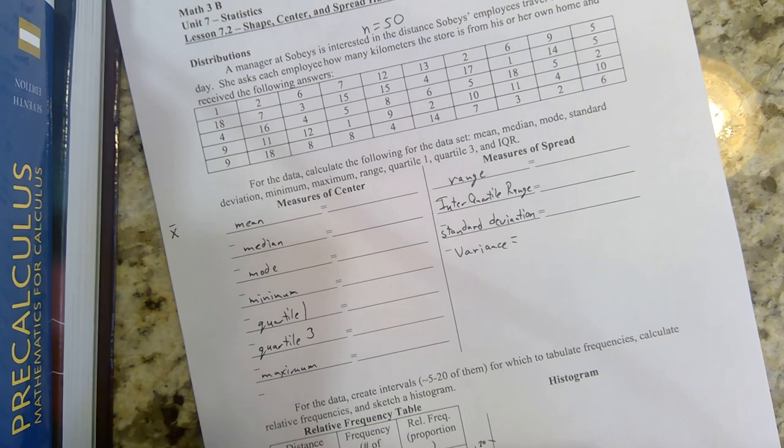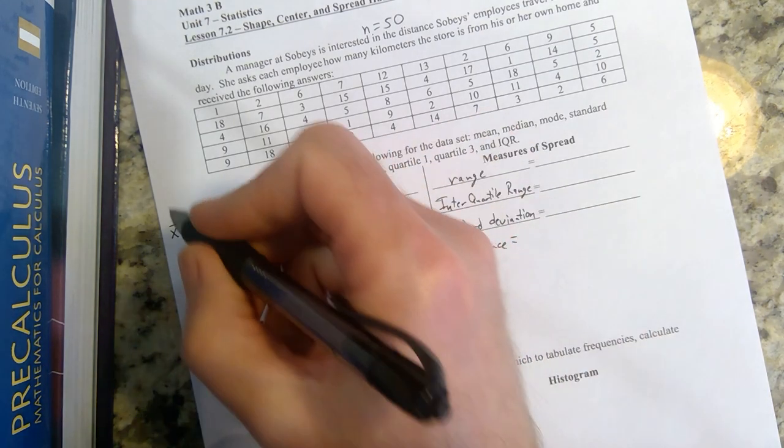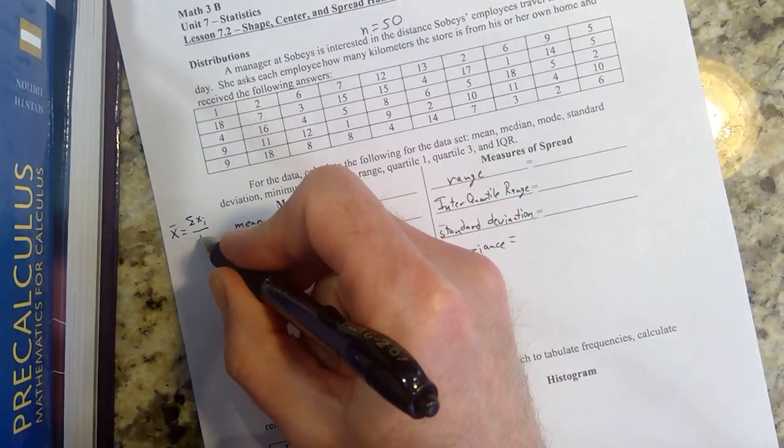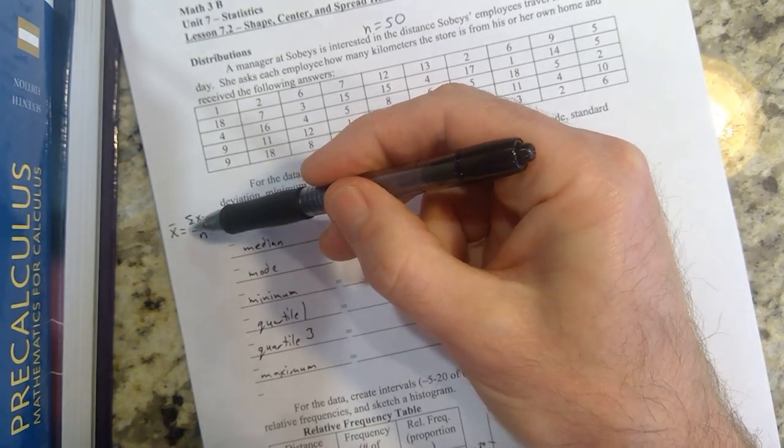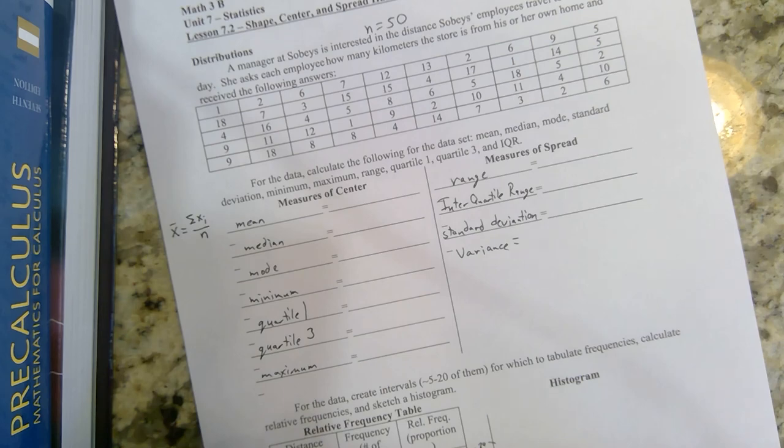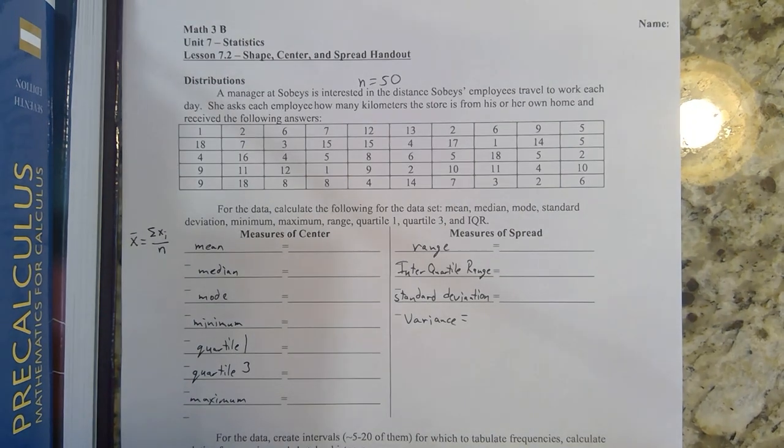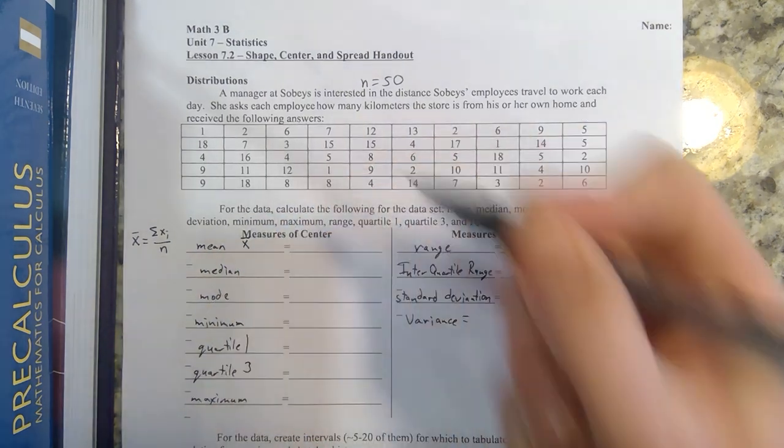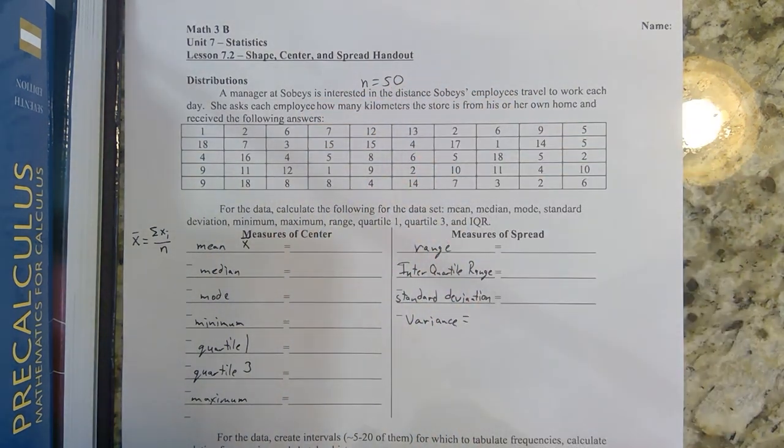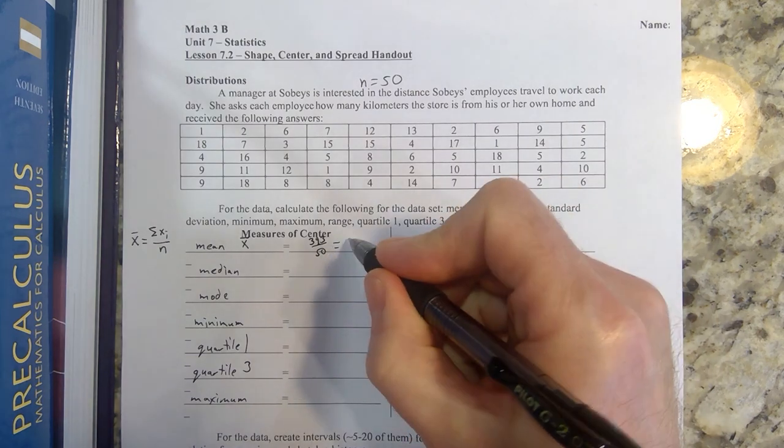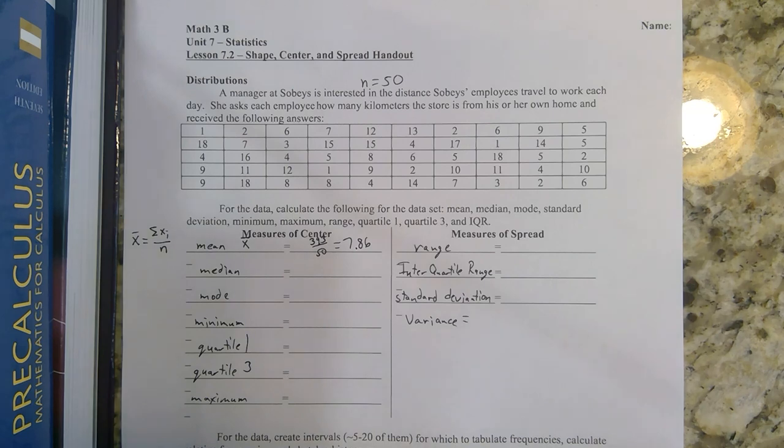The mean of x can be found by taking the sum of all my x values and dividing it by the number of values I had. This symbol right here, that's a sigma, a Greek letter that means add them all up. Lowercase n represents how many pieces of data I have. So the mean can be found by adding all these together and then dividing by 50. I get 393 divided by 50, which gives me a mean of 7.86, a measure of center, also known as the average.